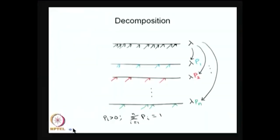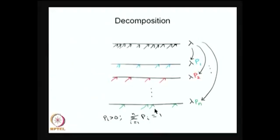The next property is decomposition. If you have one Poisson stream, you can decompose it into many Poisson streams with proportions p1, p2, ..., pn. One Poisson stream can be split into n Poisson streams with parameters lambda*p1, lambda*p2, ..., where each p_a is greater than 0 and the summation of p_a's equals 1. With these probabilities, you can split one Poisson stream into many Poisson streams.